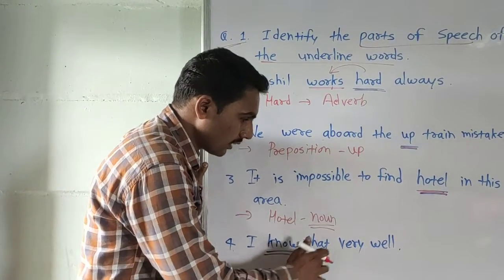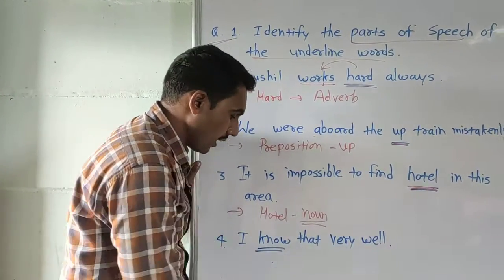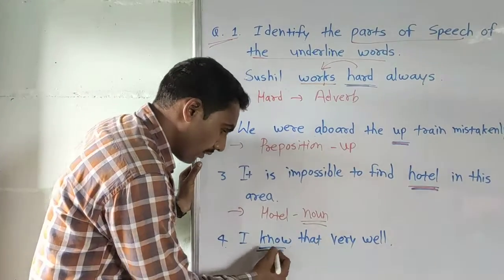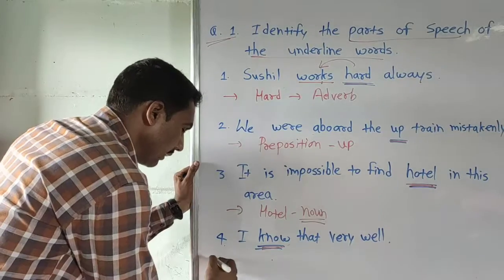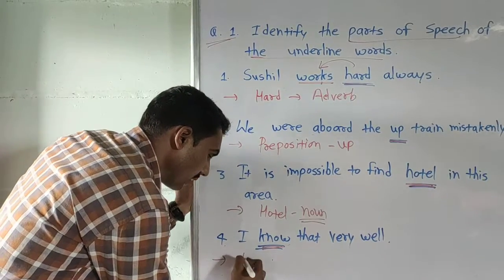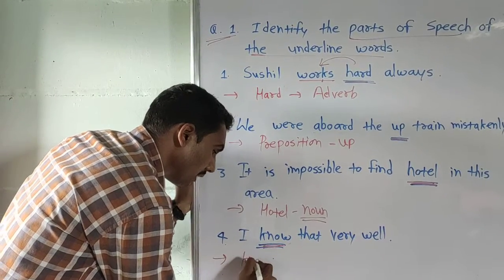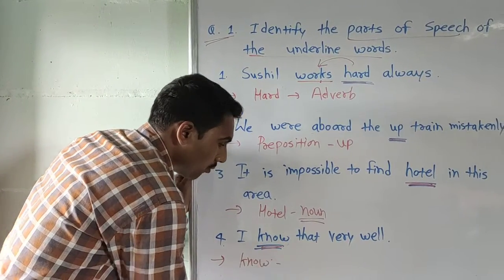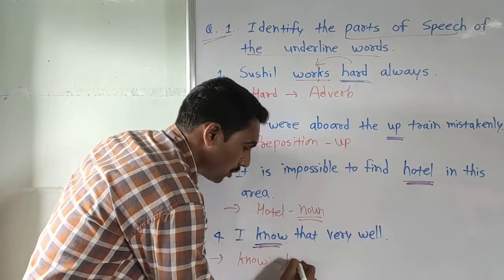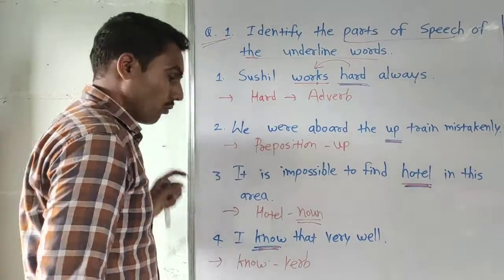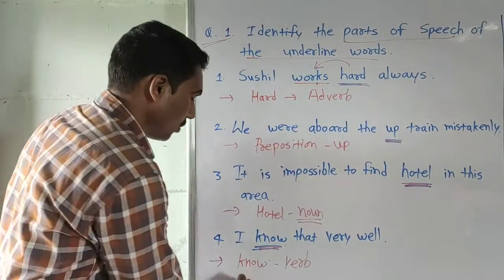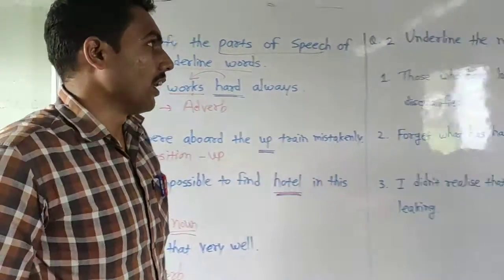Next: 'I know that very well.' The underlined word is 'know,' and this word 'know' is a verb. It is a verb.